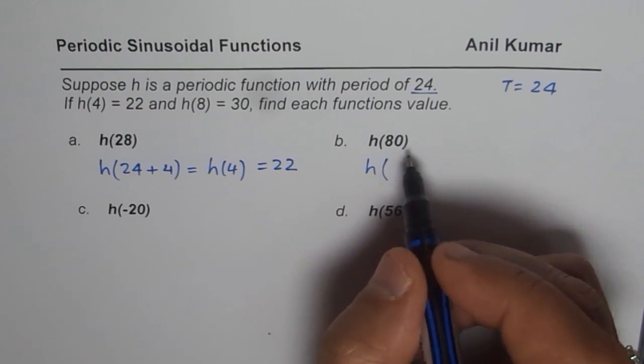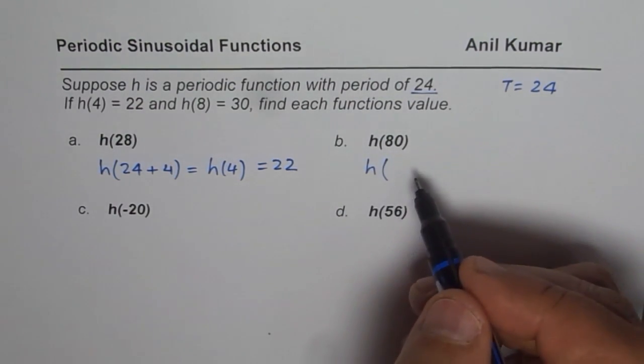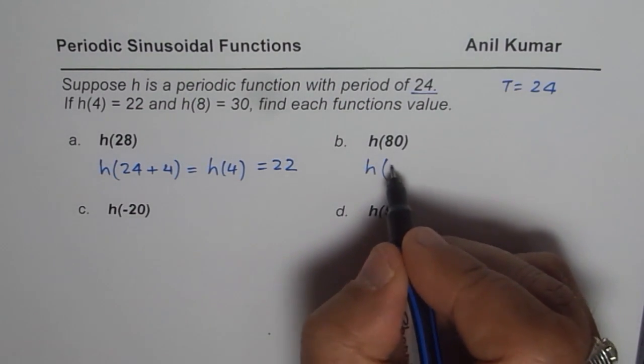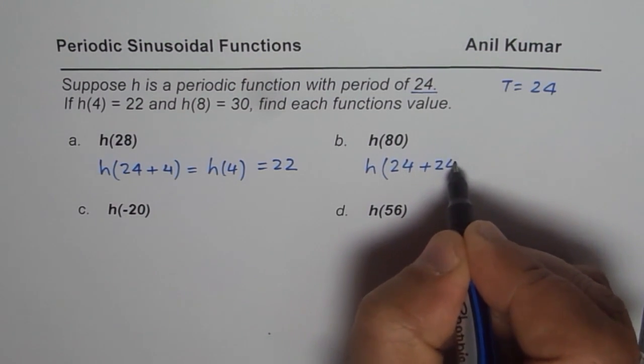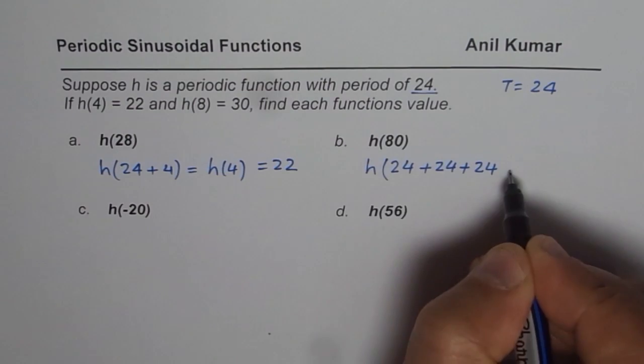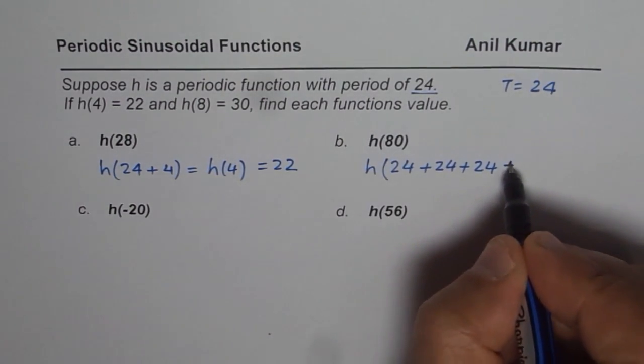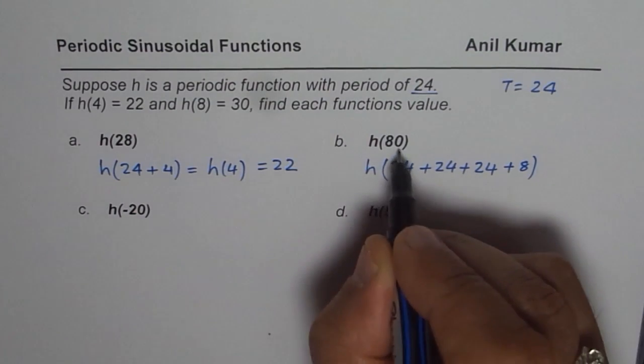So you should get 24 plus 24 plus 24. So let's go each cycle. So 24 plus 24 is 48 plus 24 is 72. And 72 plus 8 will be 80.